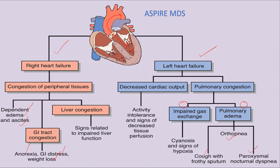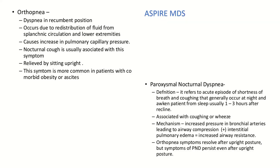Pulmonary edema appears in the form of cough with sputum, orthopnea, and paroxysmal nocturnal dyspnea. Orthopnea is difficulty in breathing occurring in the supine position. When the person lies down, there is redistribution of blood from the lower extremities directed toward the lungs, leading to increased pulmonary capillary pressure, which causes difficulty in breathing. This is usually associated with nocturnal cough.